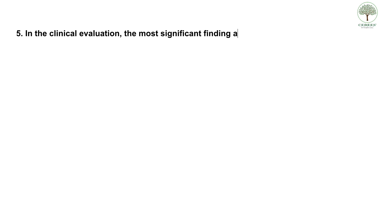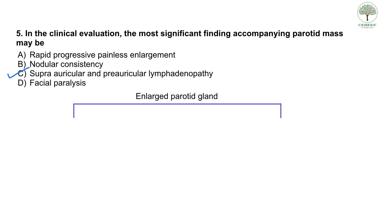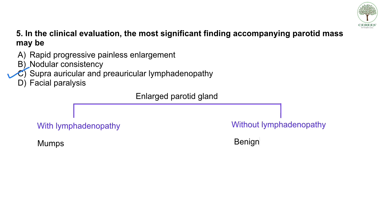The fifth question: in clinical evaluation, the most significant finding accompanying a parotid mass may be — options are: A) rapid progressive painless enlargement, B) nodular consistency, C) supraauricular and preauricular lymphadenopathy, D) facial paralysis. The correct answer is C — supraauricular and preauricular lymphadenopathy. If we have an enlarged parotid gland with lymphadenopathy, the cause is likely infective, pointing towards mumps. Without lymphadenopathy, it can be any benign or malignant neoplasm.